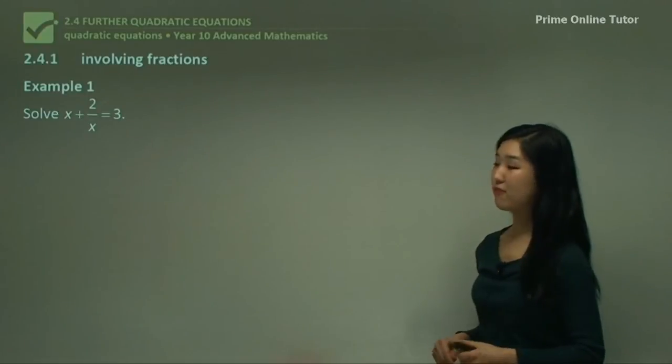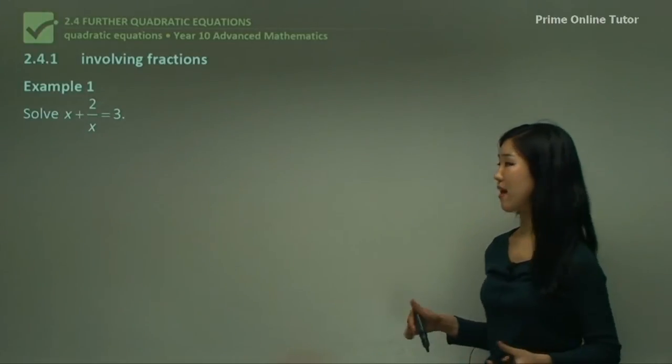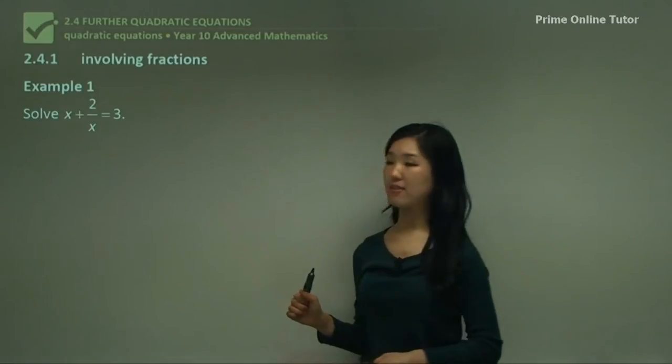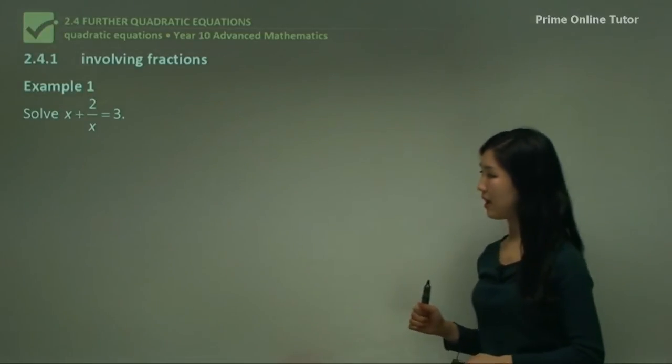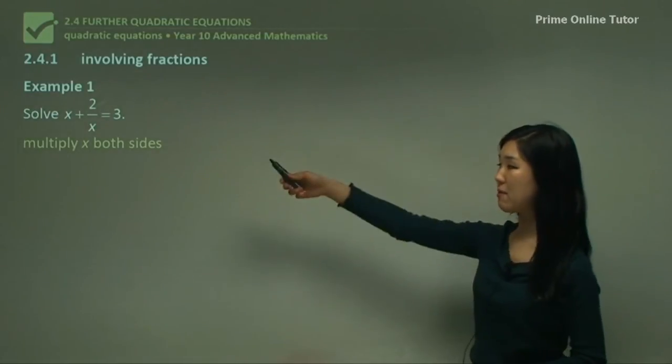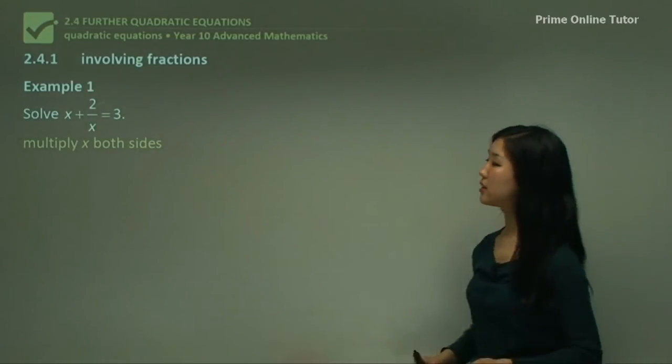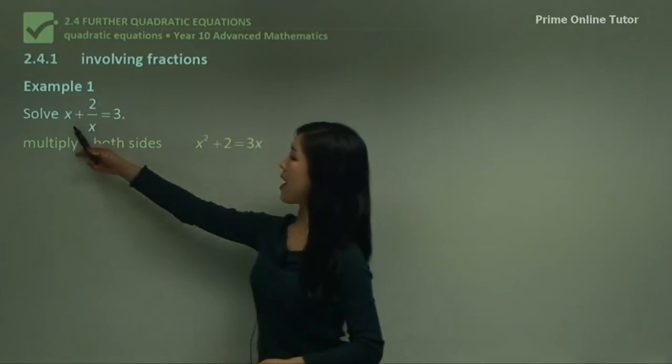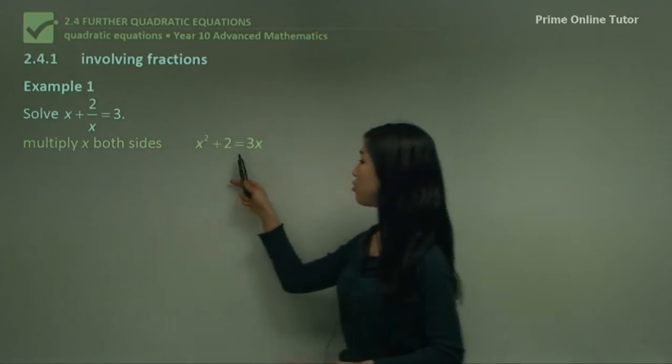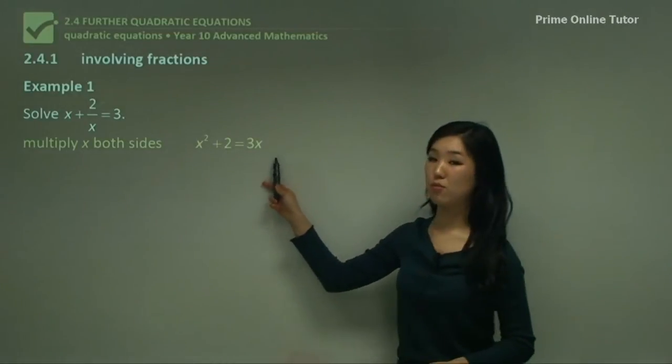Starting with involving fractions, such as this example here. Solve x + 2/x = 3. So what I'm going to do, firstly, multiply both sides by x because I want to eliminate that bottom x. If you do that, I'll get x² plus this one, the bottom eliminates. So I just have 2 and this side is going to be 3x.